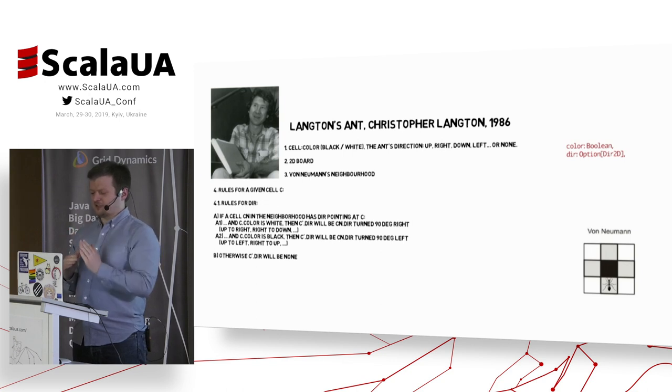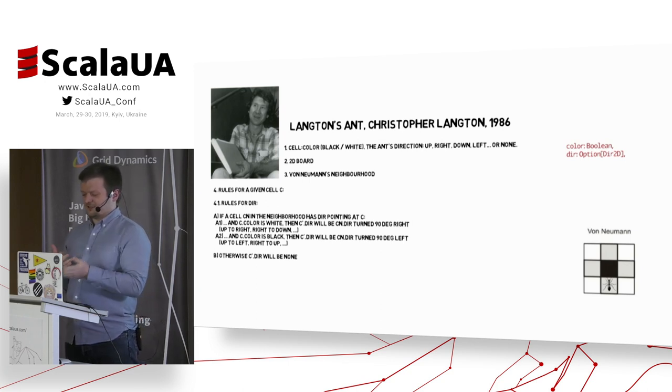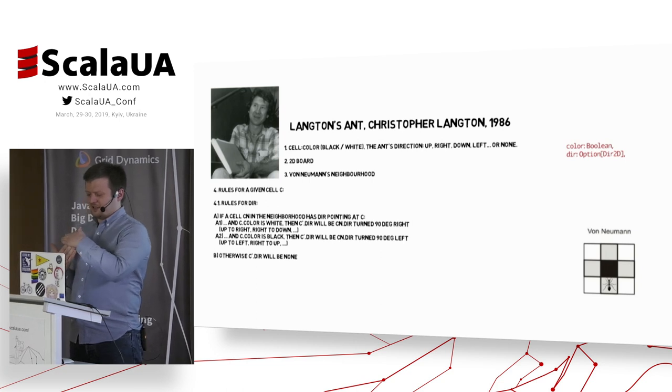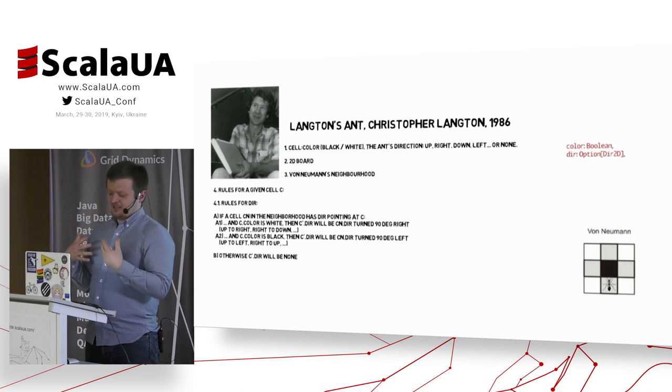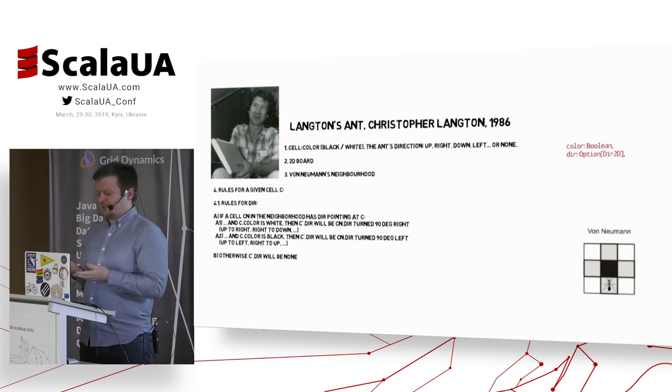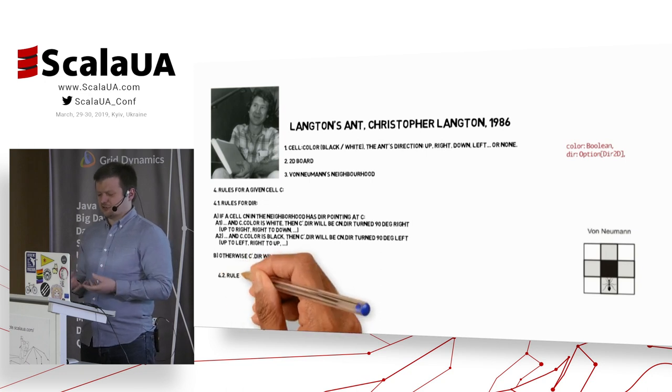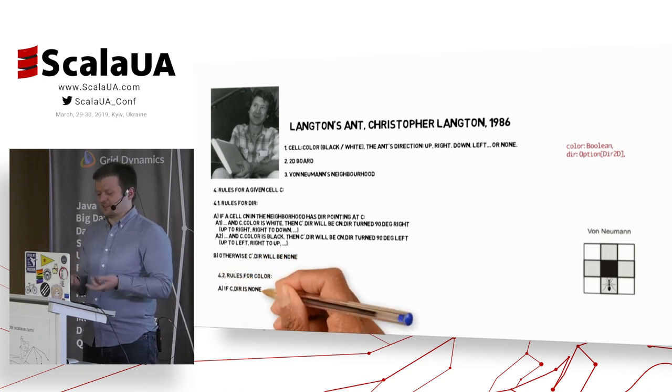For example, if the color of the cell is black, then the ant will be turned 90 degrees right. If the color of the cell is white, then the ant will be turned 90 degrees left. Otherwise, if there is no ant in the neighborhood, then the direction will not change. It will be still none.